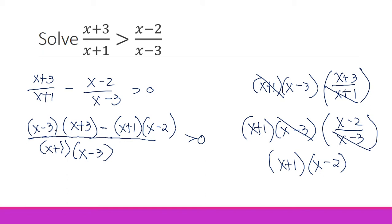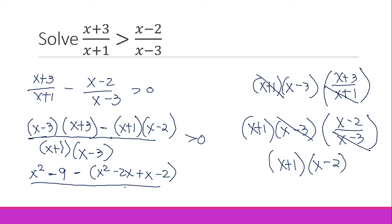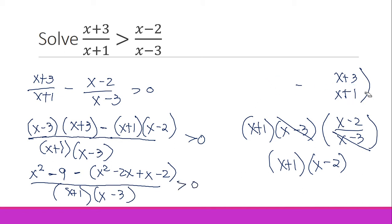Now we simplify the numerator. (x minus 3)(x plus 3) is a difference of squares, giving x squared minus 9. For (x plus 1)(x minus 2) we use the FOIL method: x squared minus 2x plus x minus 2, which simplifies to x squared minus x minus 2. We subtract that entire second product, placing it in parentheses with the minus sign.